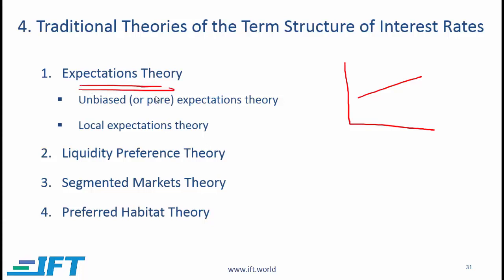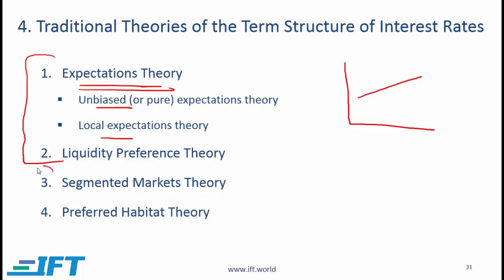Under expectations theory, we have two flavors: unbiased or pure expectations and local expectations theory. Then we have the liquidity preference theory. These two are related. We also have the segmented markets theory and preferred habitat theory, and these two are also somewhat related.